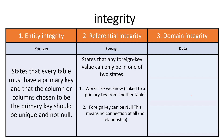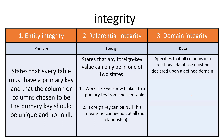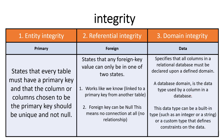Domain integrity acts upon the data itself. It specifies that all columns in a relational database must be declared upon a defined domain. A database domain is the data type used by a column. These data types can be built in while creating the table itself. Domain integrity means you must use the data type specified when building the table — for example, if you expect variable characters (varchars) in a field, that's what you must use. It forces the user to use the correct data types, which is similar to validation.